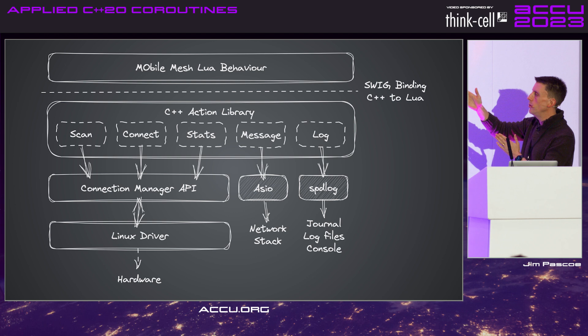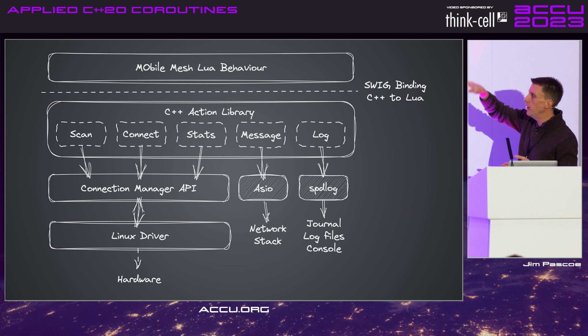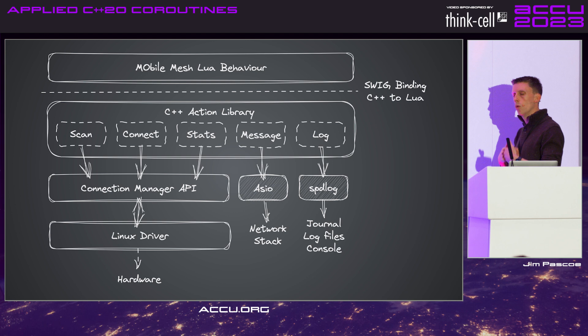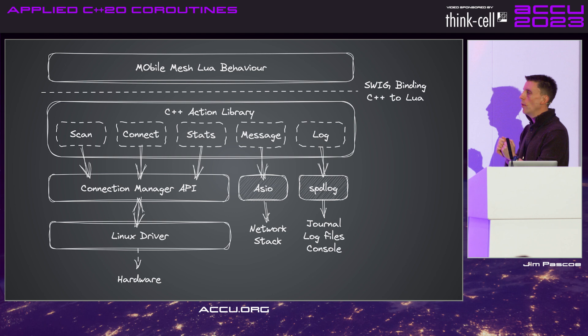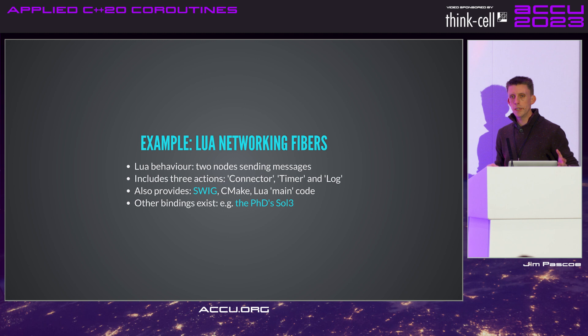The Lua behavior talks to a C++ action library — the scan, connect, get stats, messaging, and logging primitives that provide a semantic interface to the Lua behavior. That's bound to Lua through a SWIG binding expressing type mappings between Lua and the action library, allowing you to call C++ from Lua and vice versa. The C++ action library talks to lower-level components: ASIO for the networking stack, spdlog for logging (highly recommended — a great GitHub project), and then the connection manager API with a programmer-friendly northbound interface and NL802.11 southbound talking to the Linux driver and hardware.